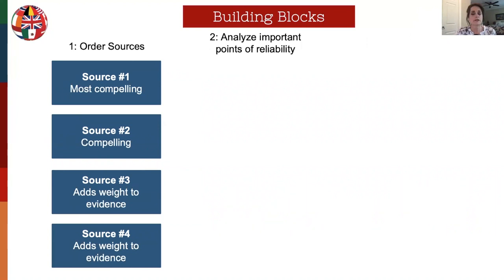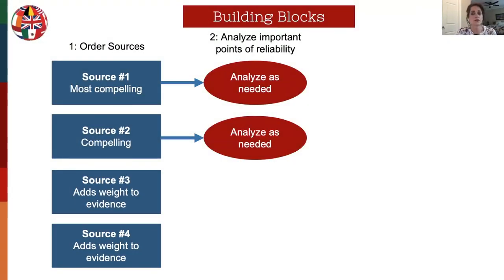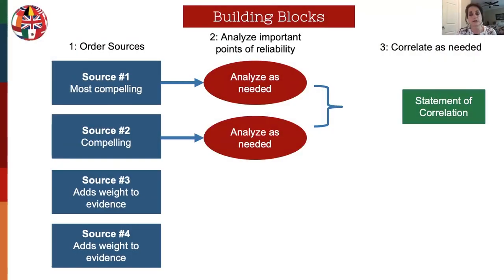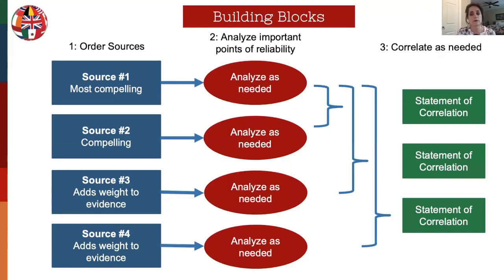Here is a quick visual overview of building blocks. We order our sources, then analyze each source one by one — starting with source one, then source two — and after analyzing them we make a statement of correlation: how does source two support source one? Then we analyze source three and add a statement of correlation for how sources three and four correlate with the other sources, and so on.